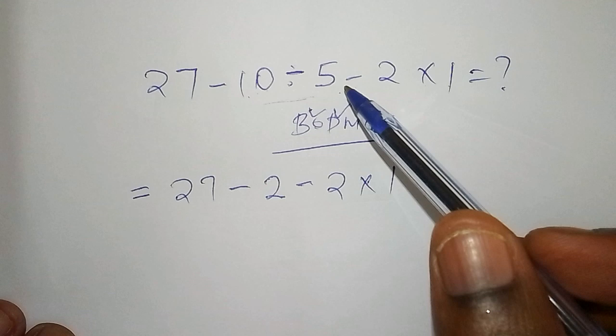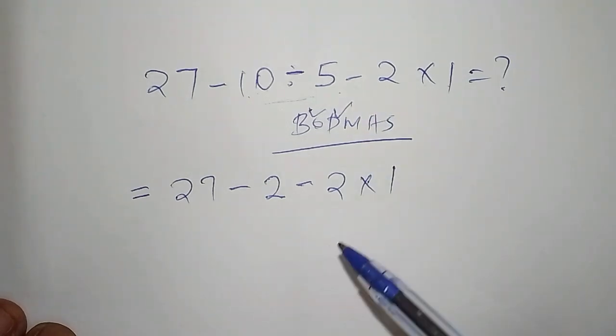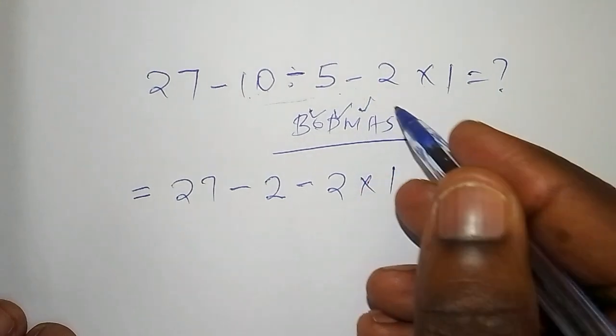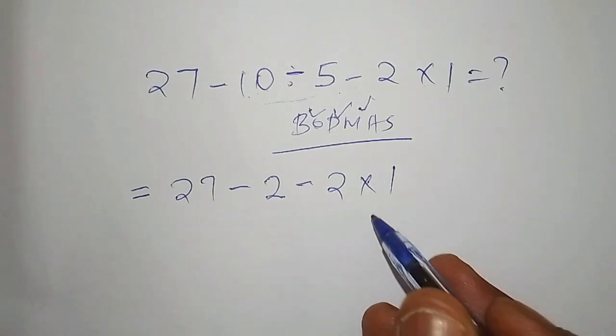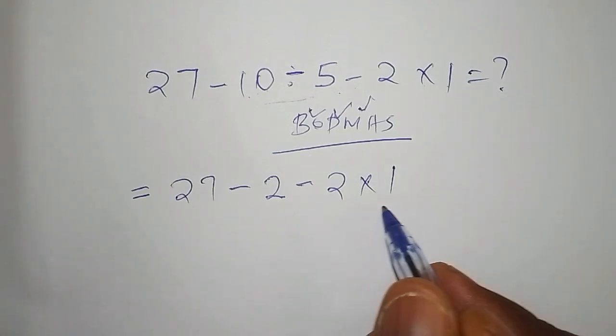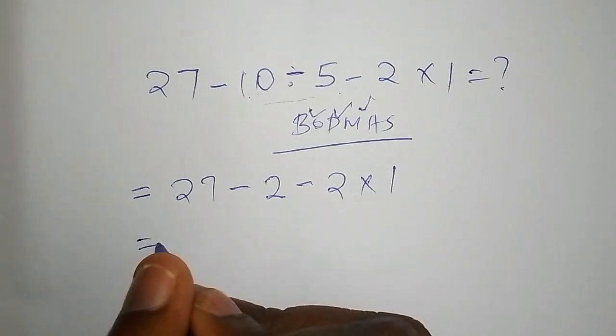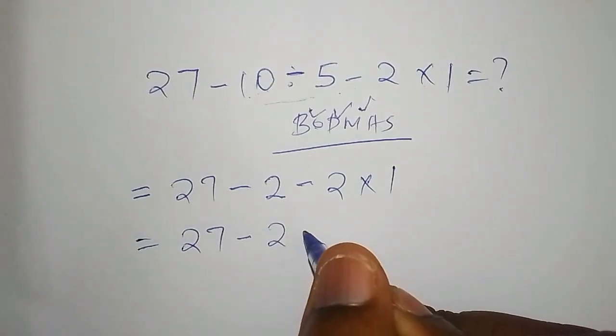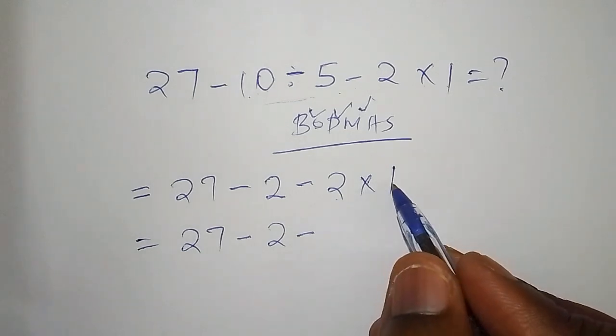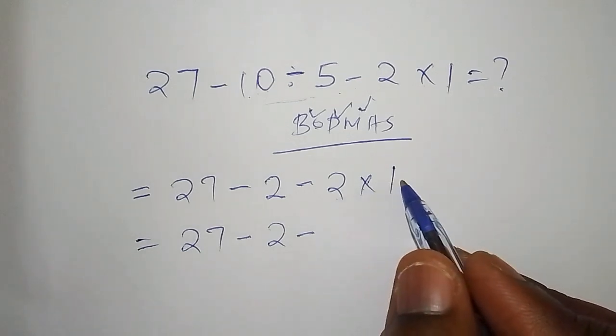So we've worked out the division sign and we no longer have the division. So the next step that we're going to do, we're going to work out the multiplication. See the multiplication that you're having here, 2 × 1, so we have to work this one out.